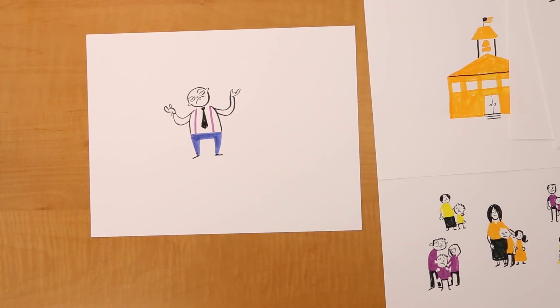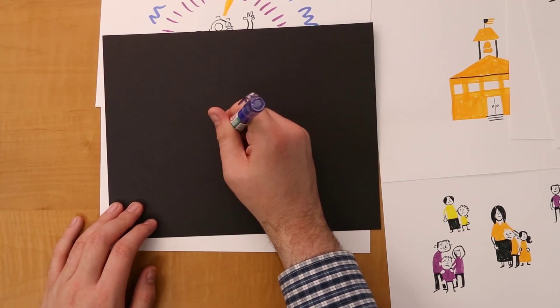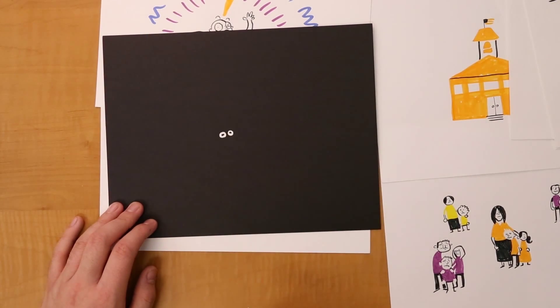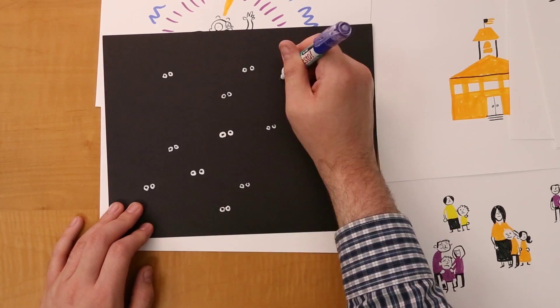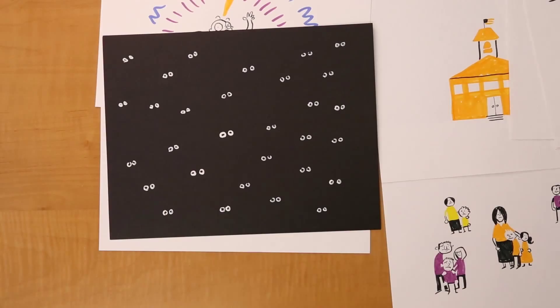The failure to educate children is everyone's problem. One child, just one child left in the dark or struggling has a profound impact on our society. But it's not just one child. It's hundreds, thousands of kids over the years left in the dark.